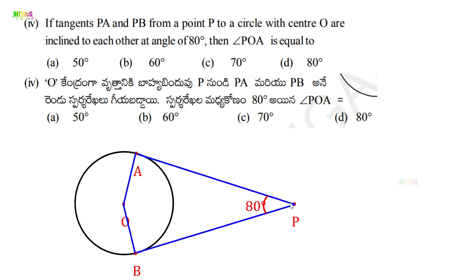Now we draw line OP which divides the 80 degree angle into two equal parts: 40 degrees and 40 degrees. We have 90 degrees here and 90 degrees here. We need to find angle POA. This is point P, this is O, this is A, so we need to find angle POA.